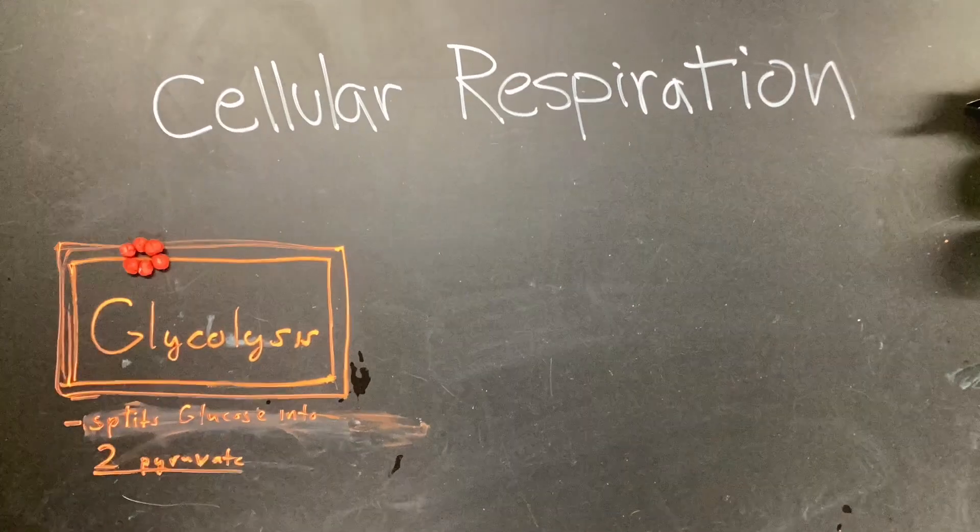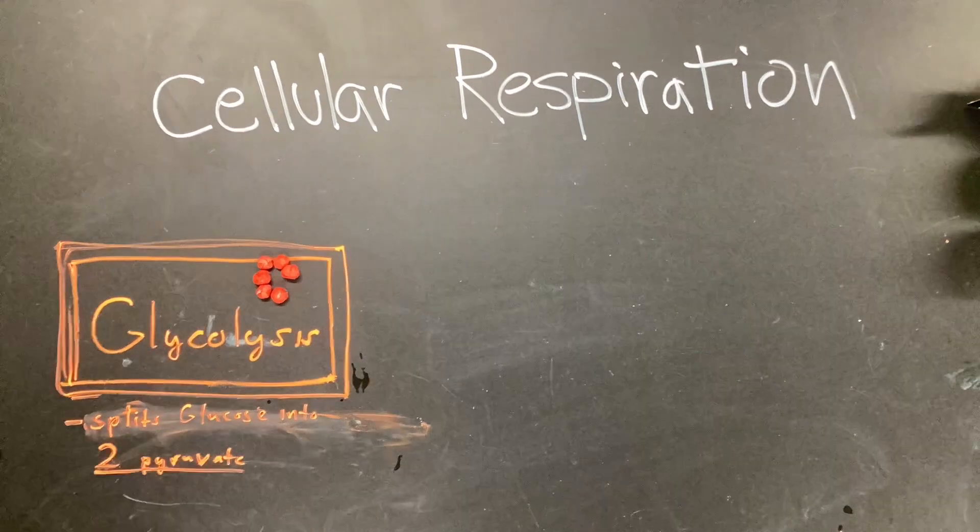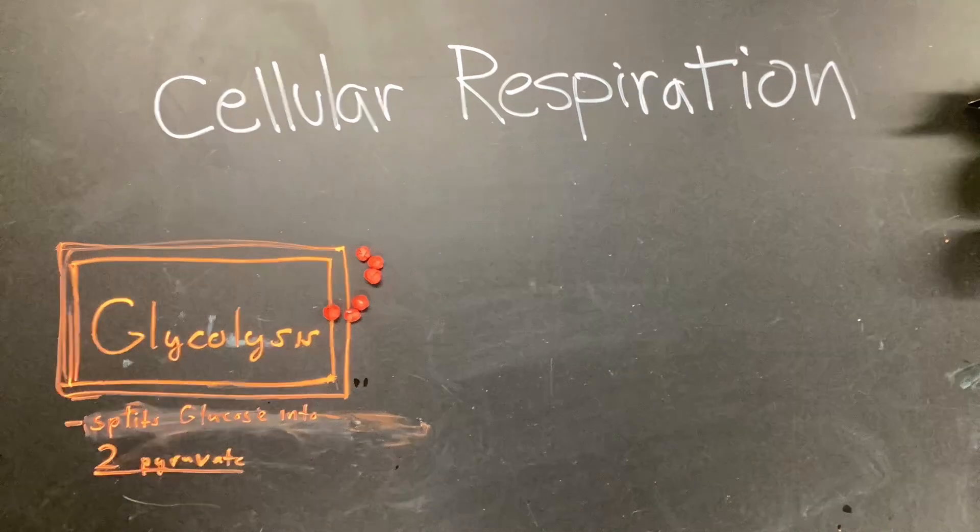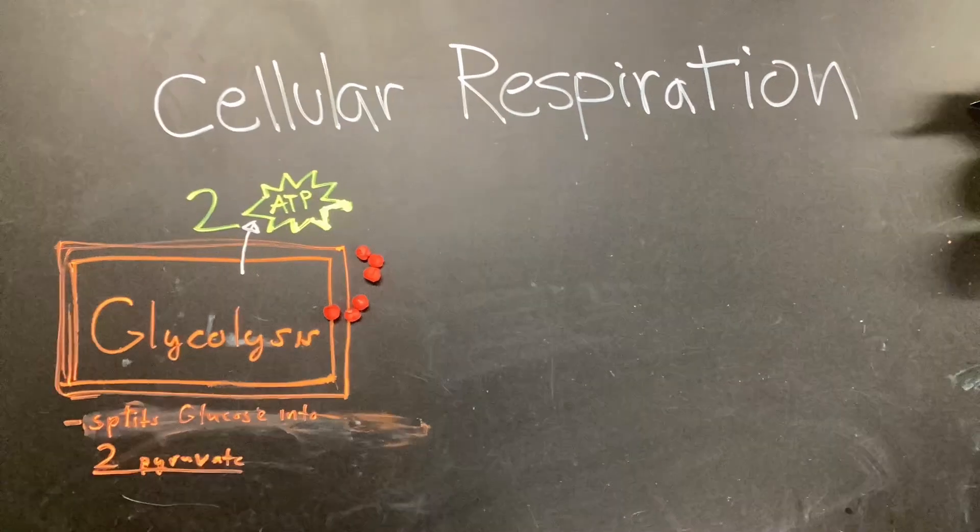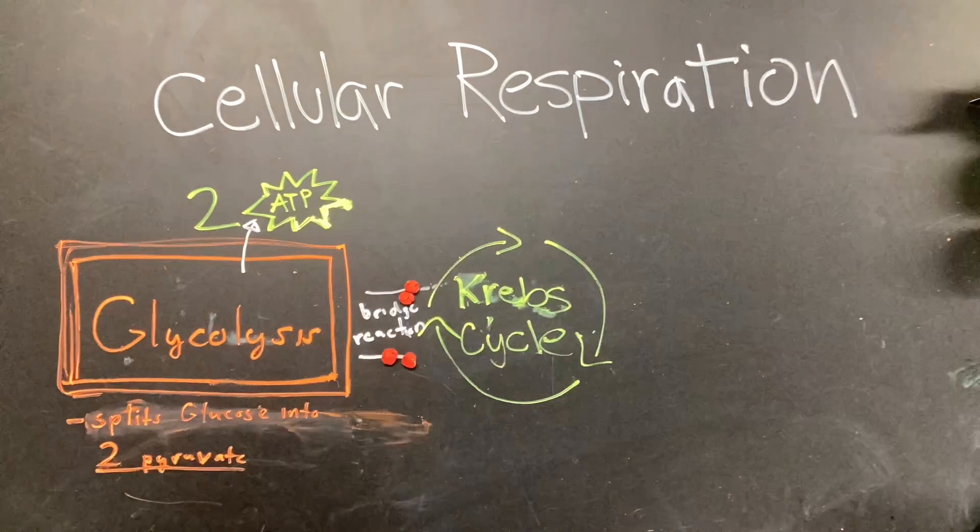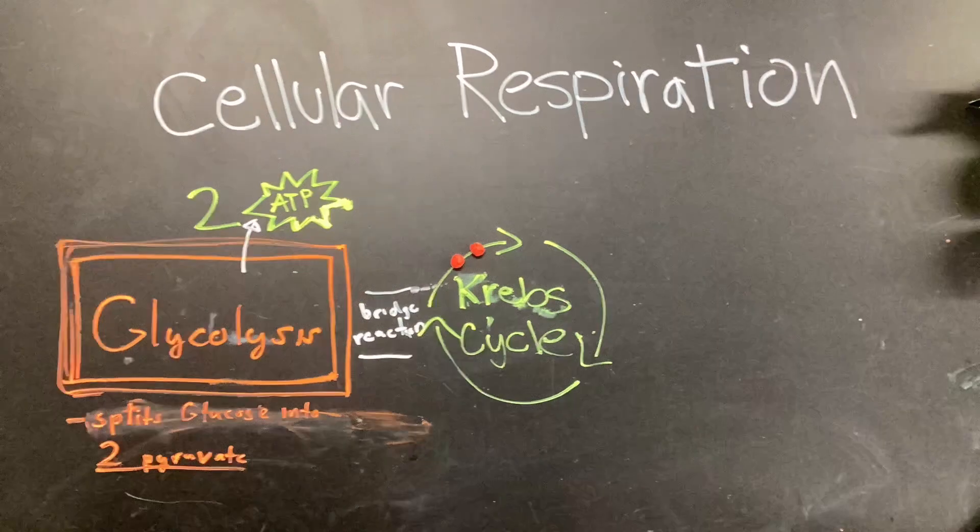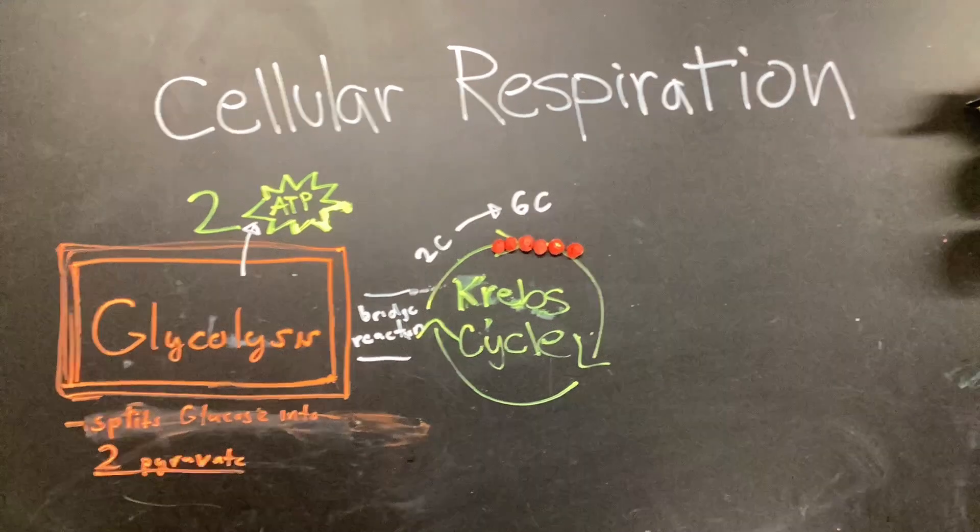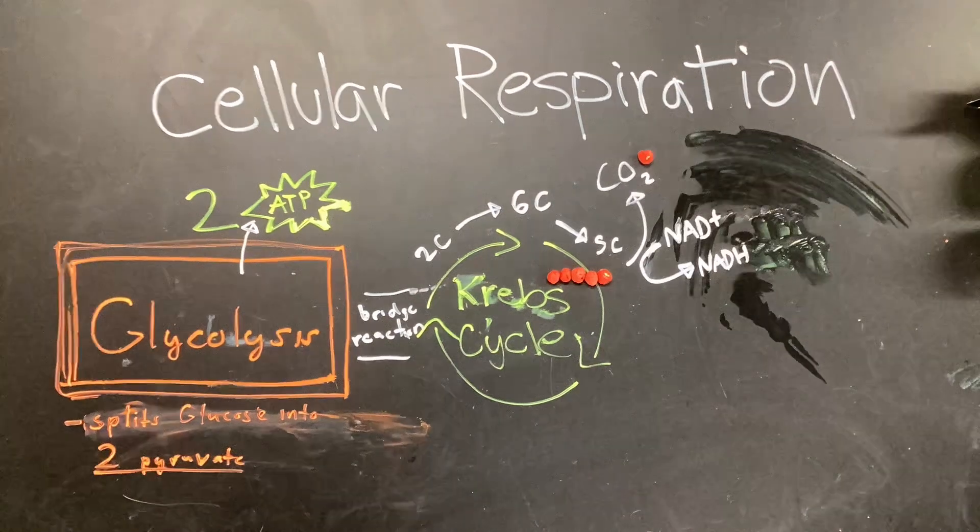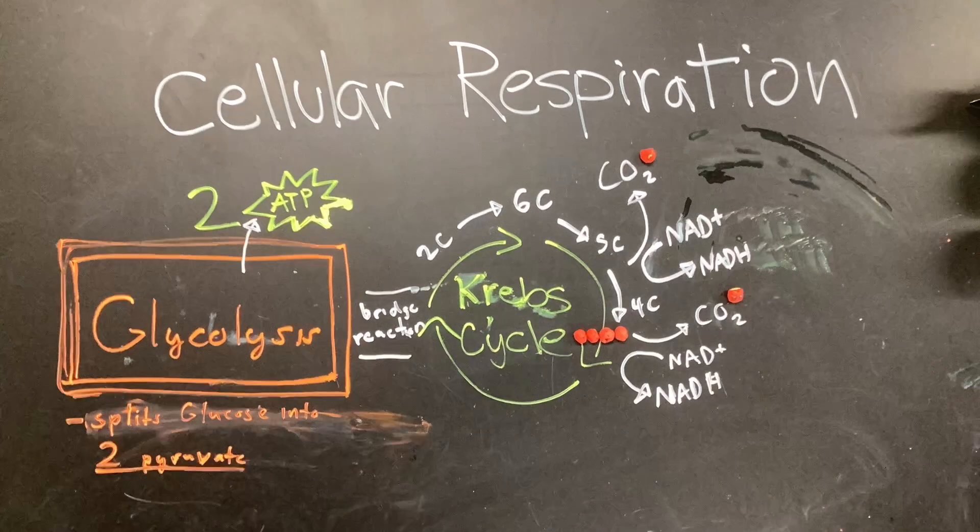The carbon then undergoes the bridge reaction and enters the Krebs cycle. It is important to note that the Krebs cycle occurs twice for every glucose, or once for every pyruvate.